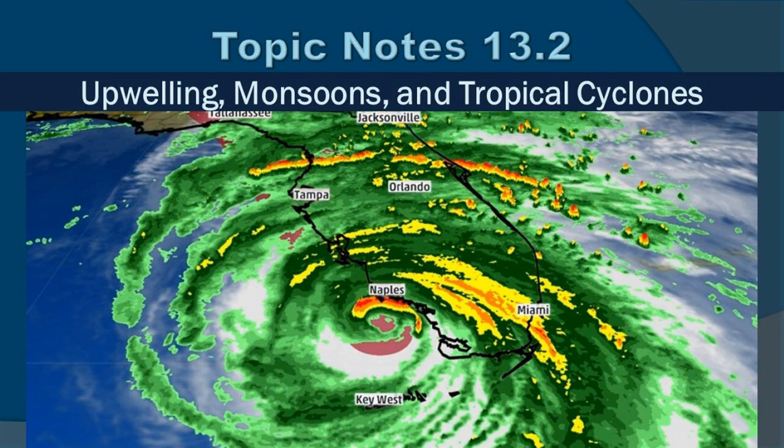Topic notes 13.2: upwelling, monsoons, and tropical storms. Anyone in Florida during the fall of 2017 probably recognizes this radar image — it's Hurricane Irma as it was coming across the southwest portion of Florida. However, due to the wobbling tracks, everyone from the Florida Keys, the East Coast, and the West Coast were under various evacuation notices, so it was pretty much a chaotic time. In this set of notes, we're going to talk about how the interaction between the atmosphere and the ocean can create some of these extreme phenomena.